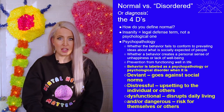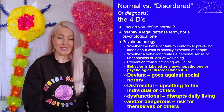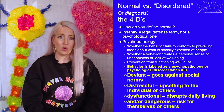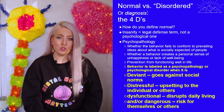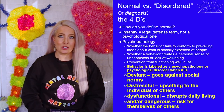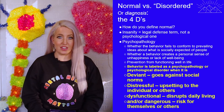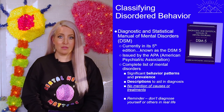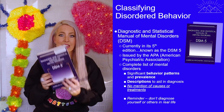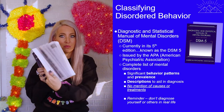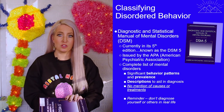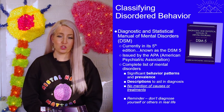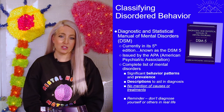Once we've established that a change has taken place — that a behavior or thought process has deviated from societal norms, that it is dysfunctional, distressing, or dangerous — how do we know which diagnosis to make? Psychologists use a manual known as the DSM-5, the Diagnostic and Statistical Manual of Mental Disorders, fifth edition. It's issued by the APA and is a complete list of all psychological disorders including descriptions to aid in making a diagnosis. The DSM-5 is about a thousand pages long, and we will highlight some of the most common psychological disorders and the treatment options available for them.